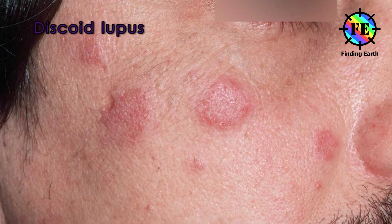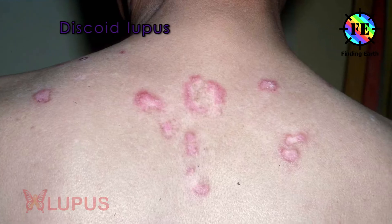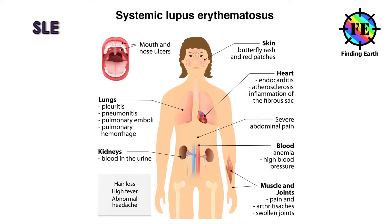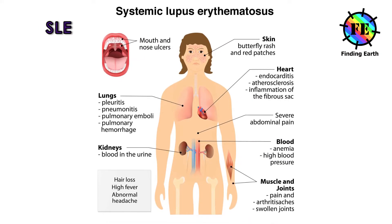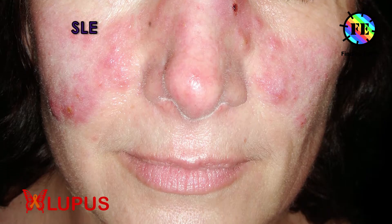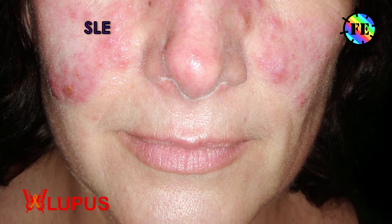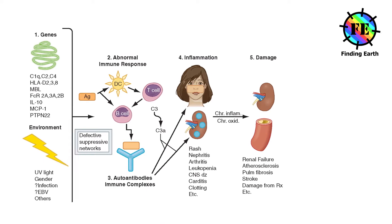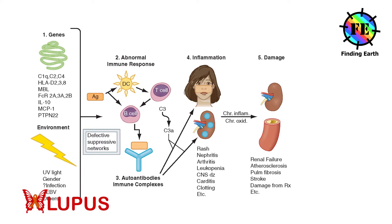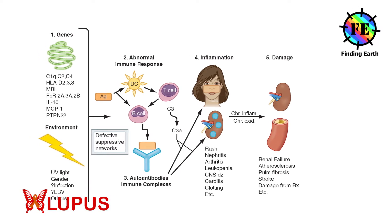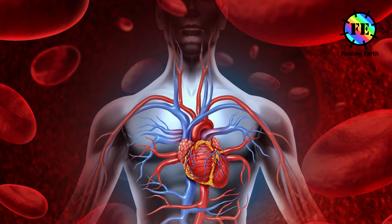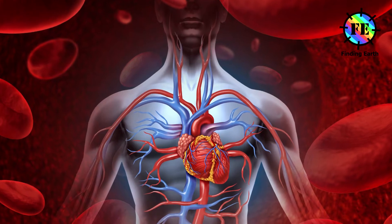Discoid lupus is characterized by a rash that appears on the face, neck and scalp and does not affect internal organs. SLE is more severe than discoid lupus because it can affect any of the body's organs or organ systems. Some people may present inflammation with only skin and joints, while other SLE sufferers may see joints, lungs, kidneys, blood and the heart affected.